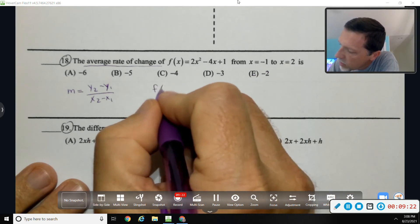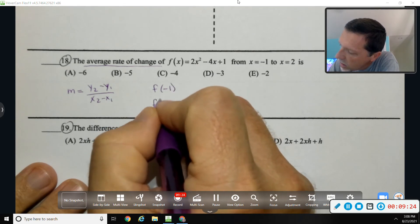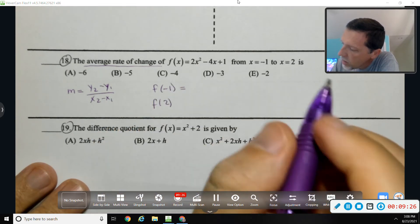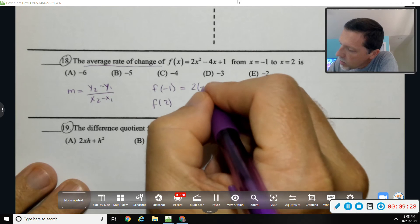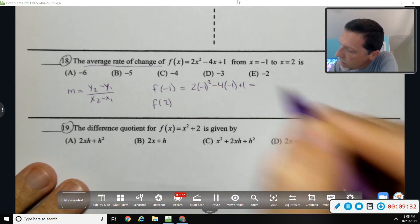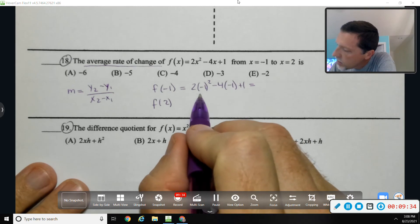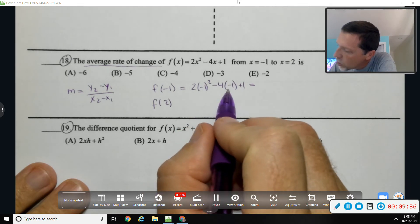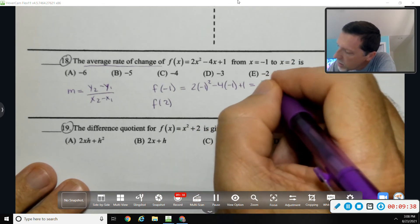So just good old algebra one slope formula. So I've got my x values. I will need the y values, so I need f of negative one and f of two. So if I plug in negative one, let's see, I get two plus four plus one, which is seven.